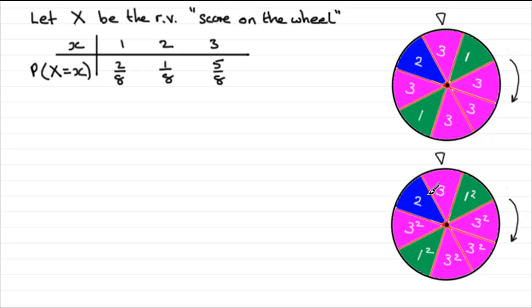We'll just mark those on. So we've got a new wheel with new scores: 1, 9, and 4. So we've got a new table that we can draw up.